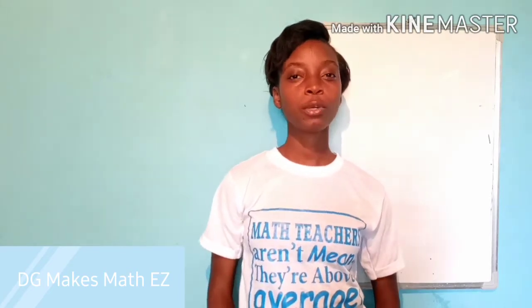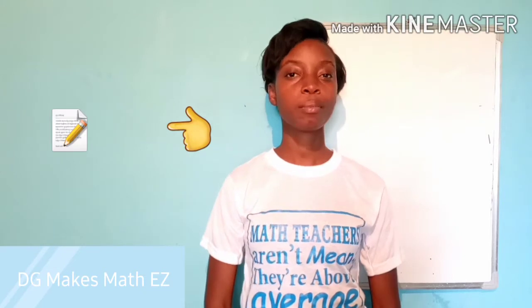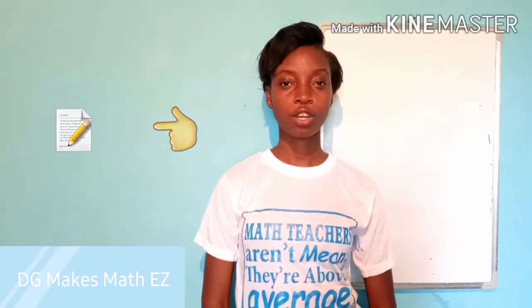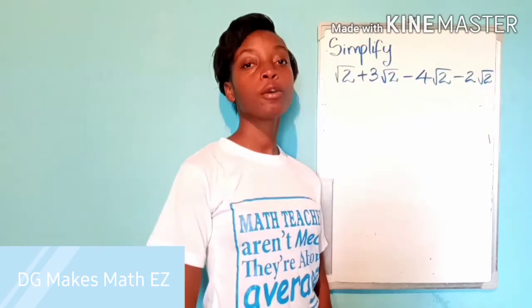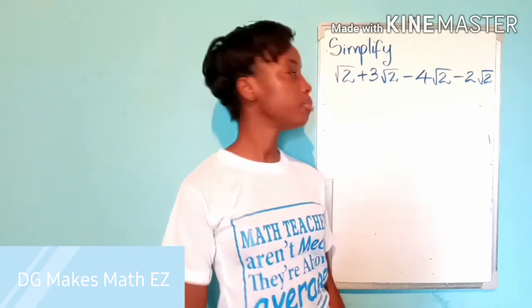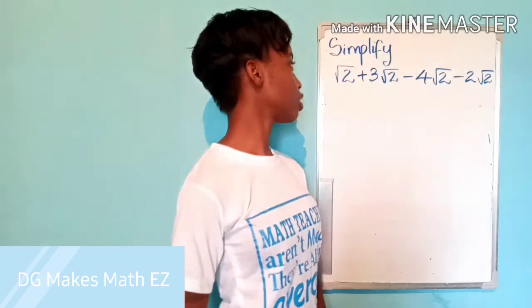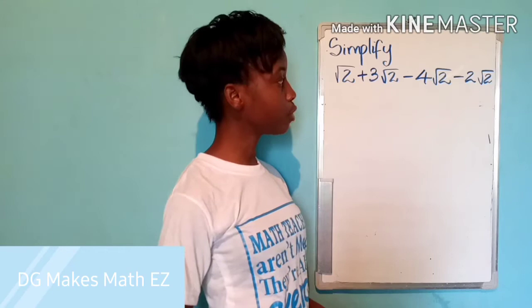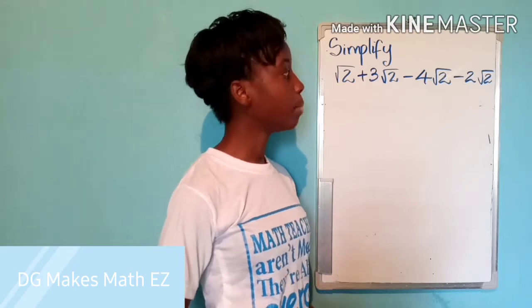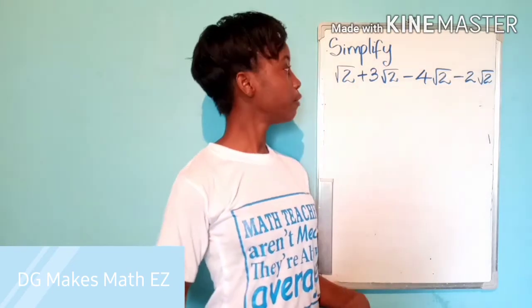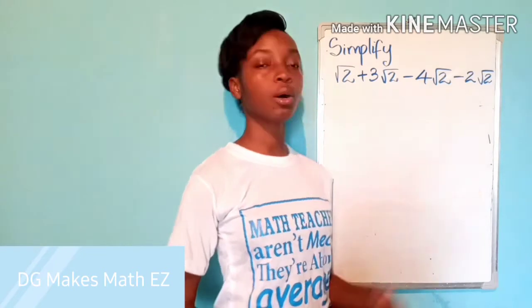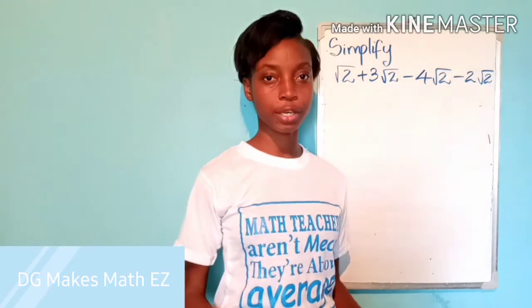Keep looking to the left side of your screen as there will be some important points as we work through our questions. For our first question, we are being asked to simplify the expression: root 2 plus 3 root 2 minus 4 root 2 minus 2 root 2. The first thing that we notice is that all of these are what we call like surds.